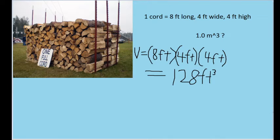Multiplying 8 feet times 4 feet times 4 feet, we get a volume of the cord of 128 cubic feet. So that is going to be the volume of a single cord of wood.